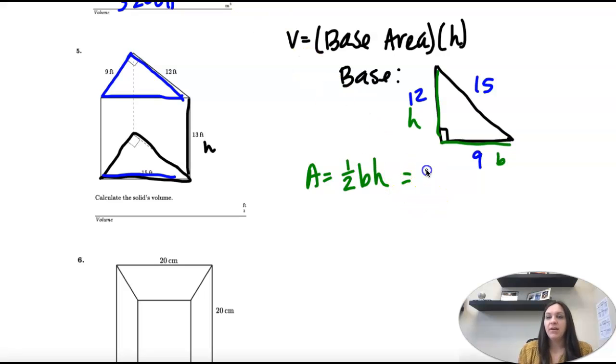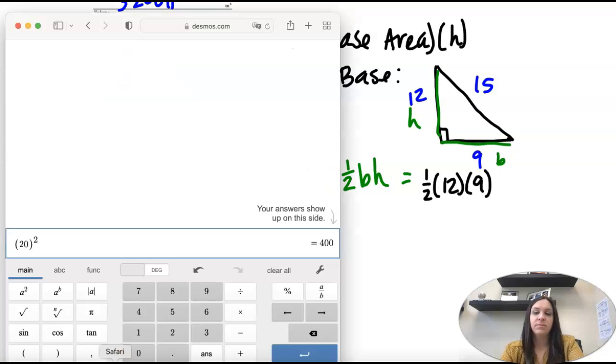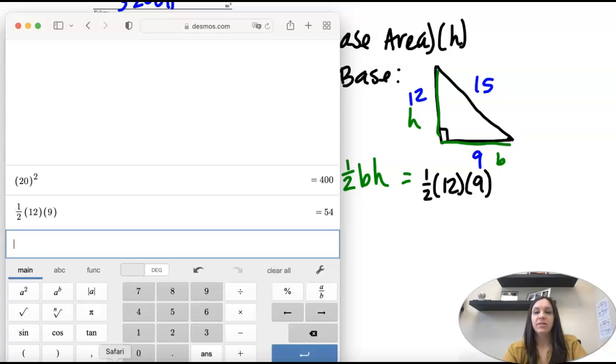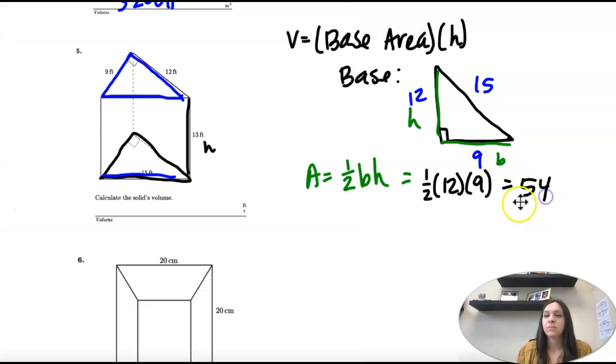So we have one half and then we're just going to multiply 12 and 9. So one half, 12 times 9 is 54. So that's this part, 54.